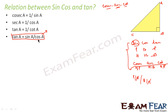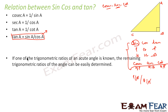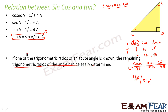Also, tan theta is sin theta by cos theta. We should also know that if one trigonometric ratio of an acute angle is known — for example, if we know sin A — then we can determine everything: cos A, cos B, cos C, sec A, tan A, cot A. So all the trigonometric ratios can be determined when only one is known. We will take some examples to prove this.